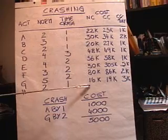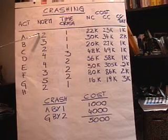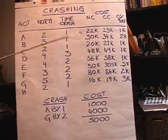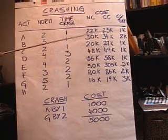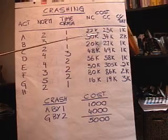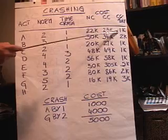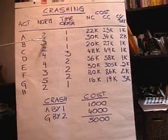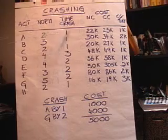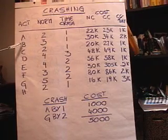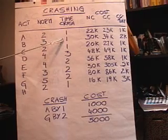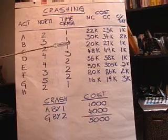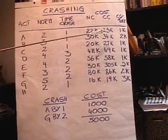We also have data about the normal cost of these activities. The normal cost is associated with the normal time, so activity A normally costs $22,000 to complete in two days. But if you want to crash it down to one day, it costs an extra $1,000 — it will cost $23,000. So the crash cost per day is $1,000, which is the difference between the crash cost and the normal cost divided by the normal time minus the crash time. On activity B, normally it takes three days but we can crash to one, and that extra two days costs $4,000, so the crash cost per day is $2,000.